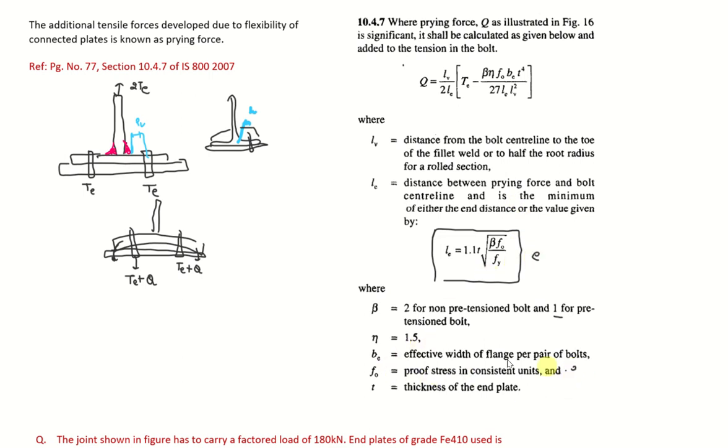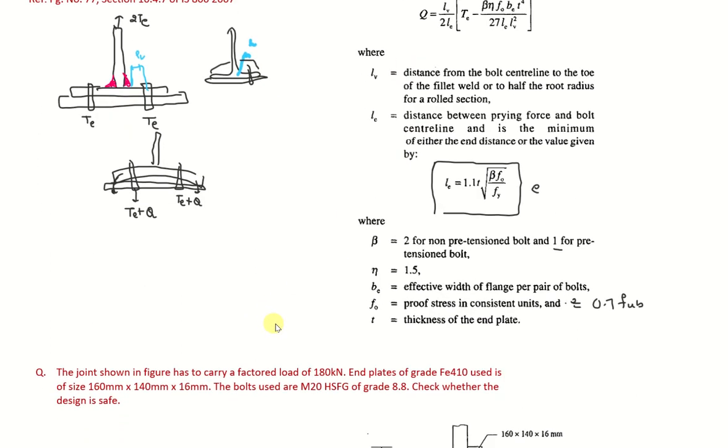And it is proof stress 0.7 times Fub. That is the ultimate tensile strength of the bolt. T is the thickness of the end plate. So in order to understand it clearly, let us see an example.